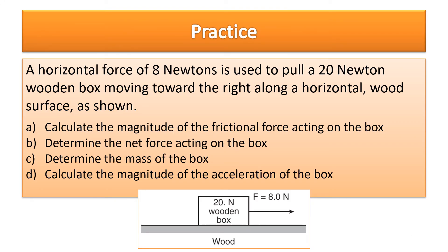Try practicing this next problem on your own. A horizontal force of 8 Newtons is used to pull a 20-Newton wooden box moving to the right along a horizontal wood surface. The problem asks you to calculate the frictional force, determine the net force, determine the mass, and calculate the acceleration. Importantly, they give you a 20-Newton wooden box — that means 20 Newtons is the weight, FG, not the mass.